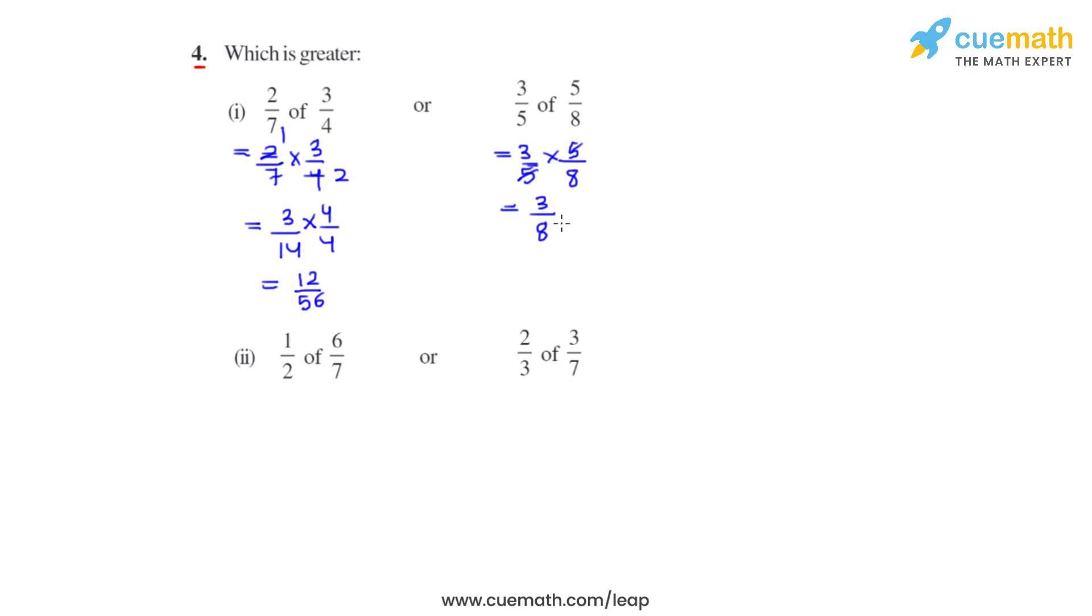Now we'll make the denominator of 3 over 8 as 56. To do that, we'll multiply 7 to both the numerator and denominator. So we get the equivalent fraction as 21 over 56.